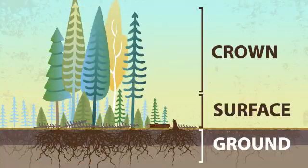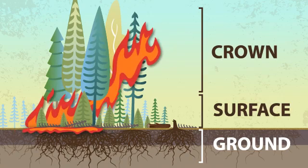It is important to note that these fires generally do not occur in isolation. For example, a surface fire will often burn through surface and ground fuels, and in a crown fire all three fuel strata will often burn simultaneously.